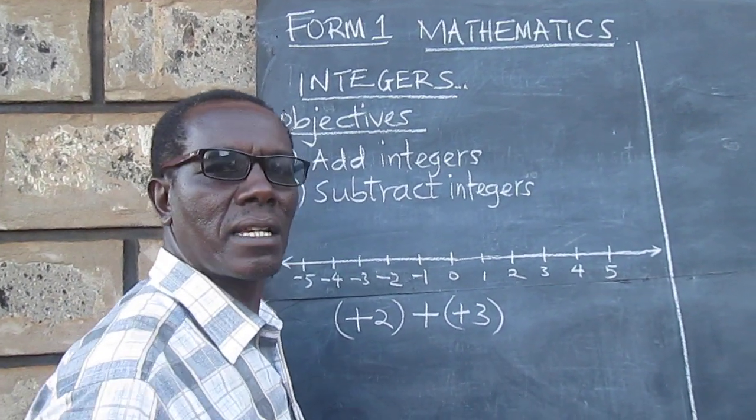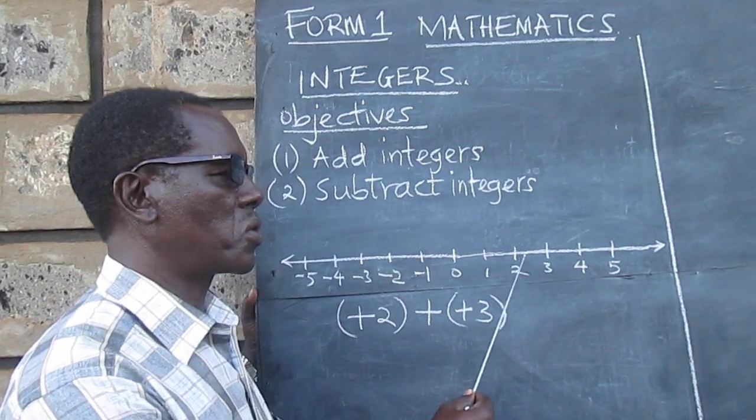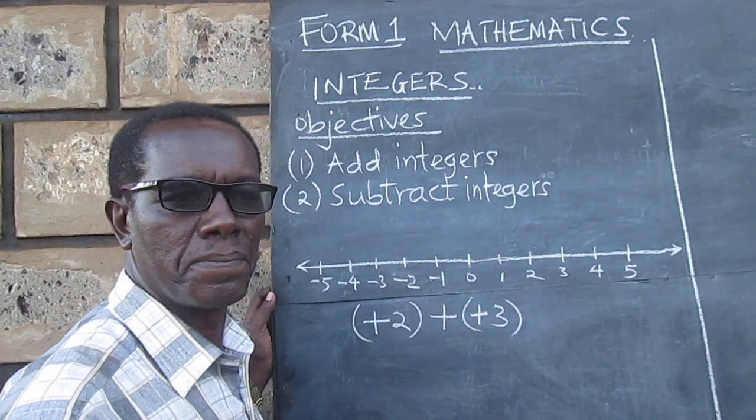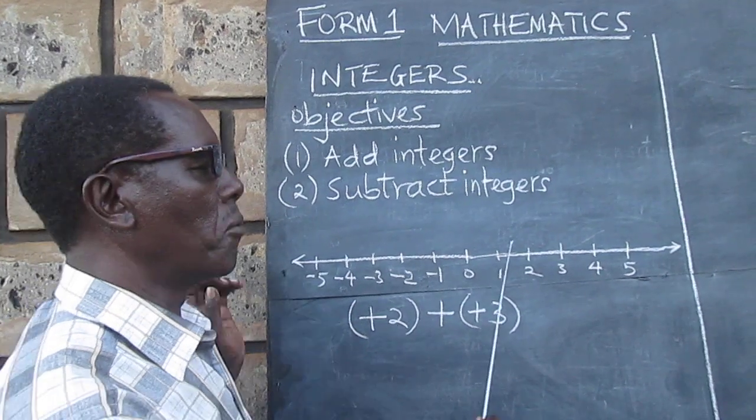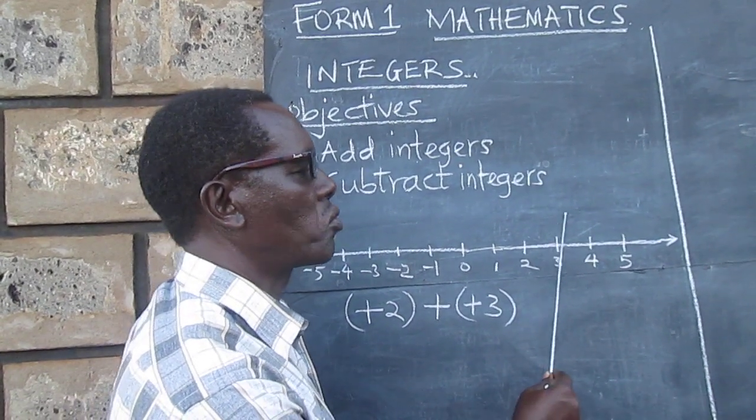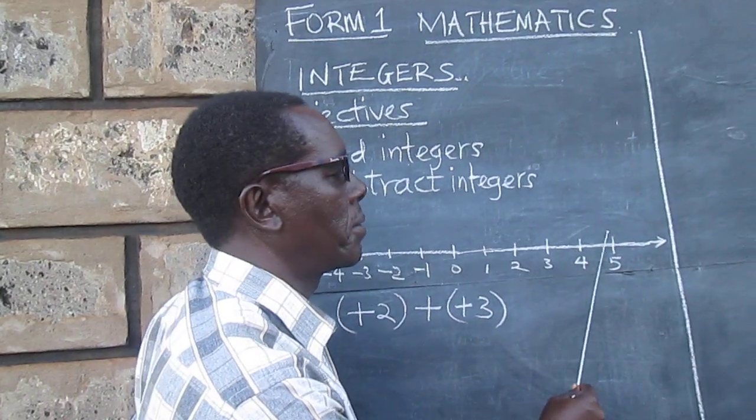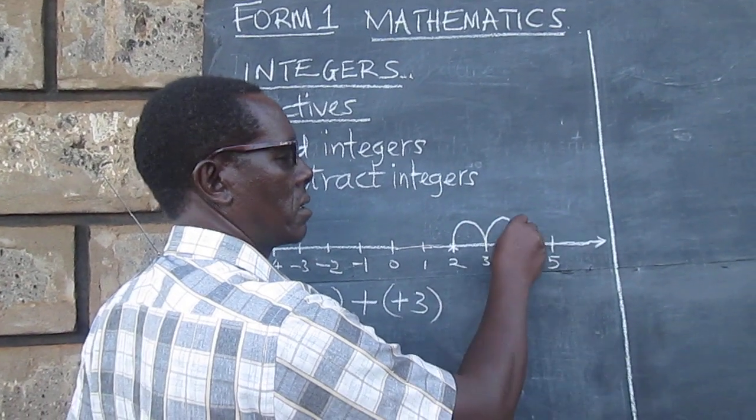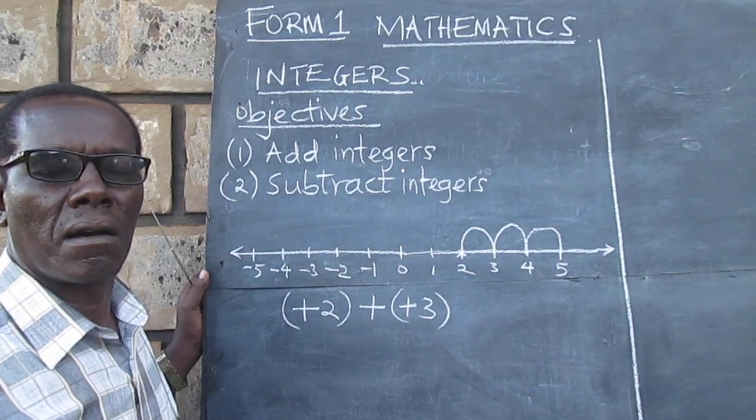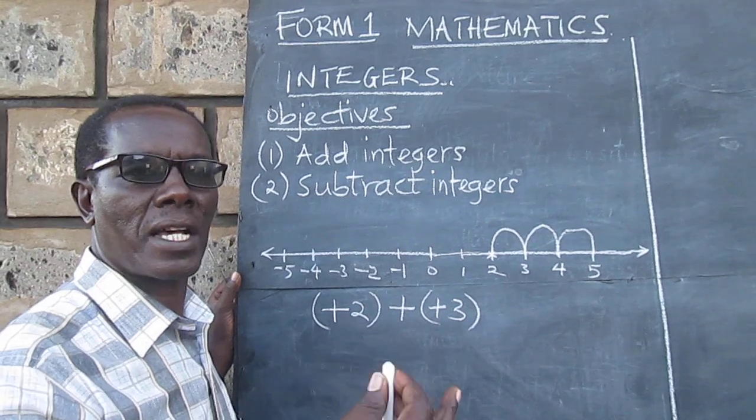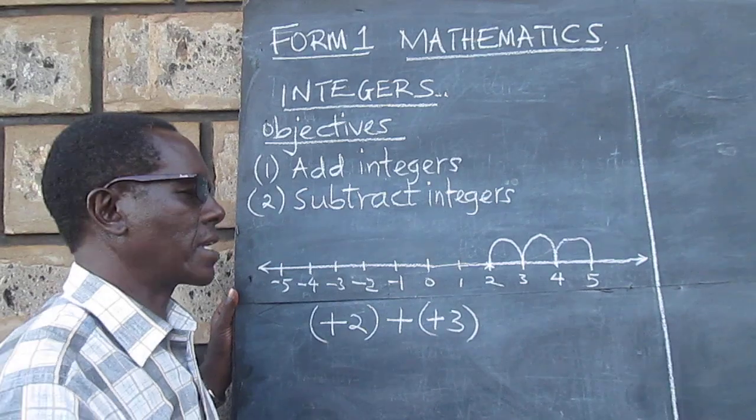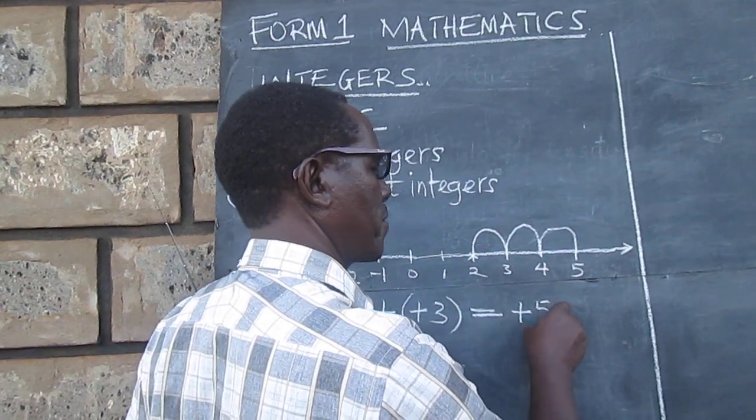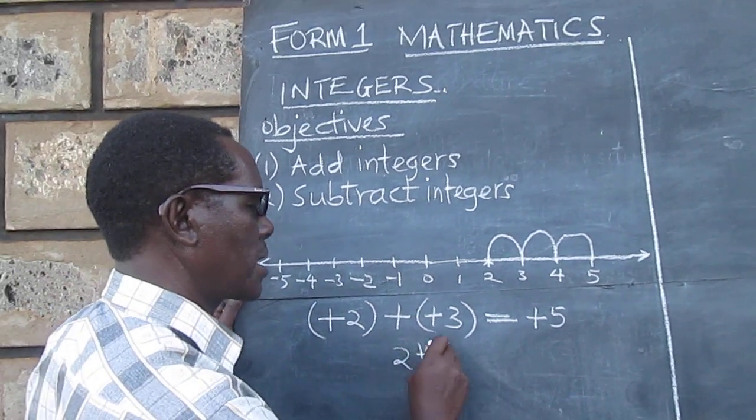Therefore, plus 2 plus 3 would mean that we start from 2, positive 2, and then we move two steps to the right of 0. And therefore, it would mean moving from positive 2, and then three steps, so that we end up at 5. And we can even show that on the number line. So we are starting here, and we move 1, 2, 3. Very basic, but very important, as far as understanding the directed numbers is concerned. And therefore, positive 2 plus positive 3 will give us positive 5. This is generally what we write as 2 plus 3 equal to 5.